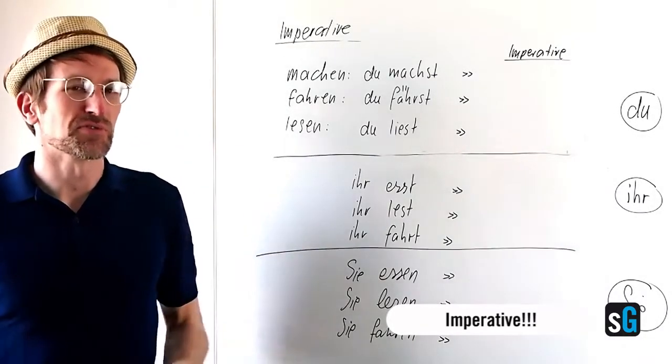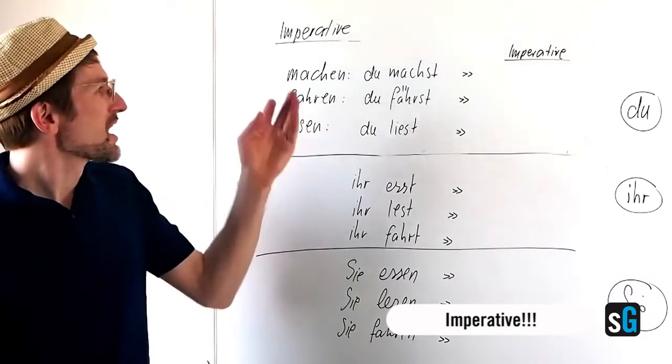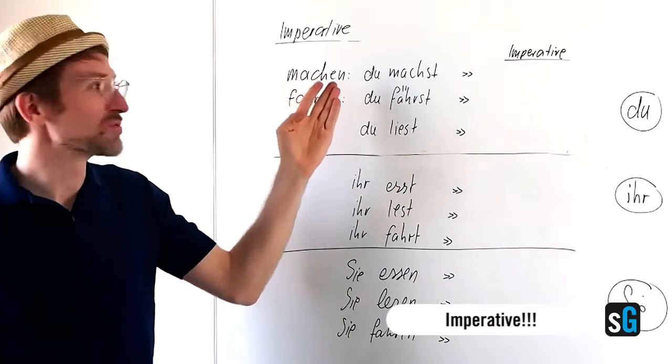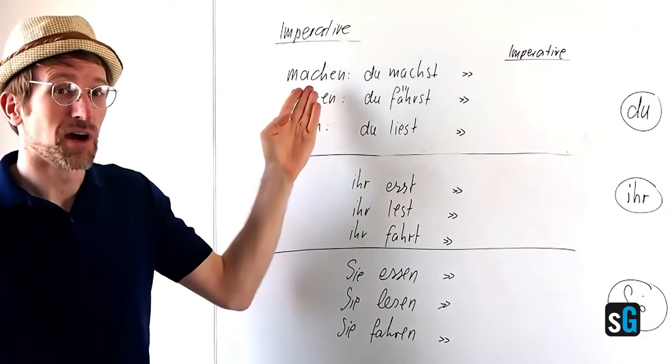Let's talk about the imperative, how to build it mainly. You can see three examples here: machen, fahren, lesen, to do or to make, to drive, and to read.